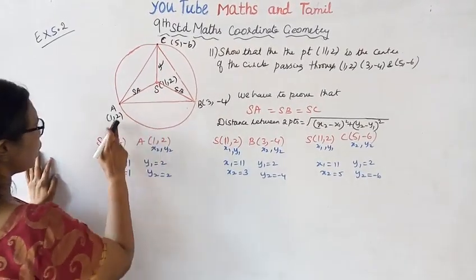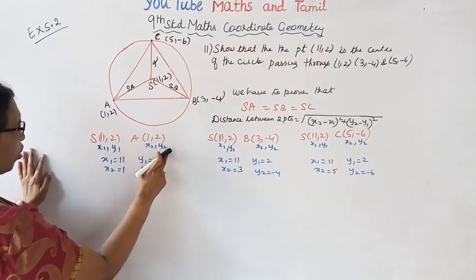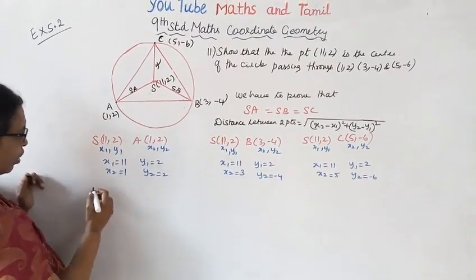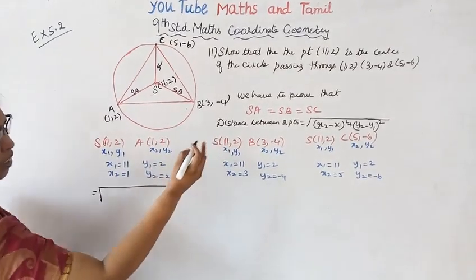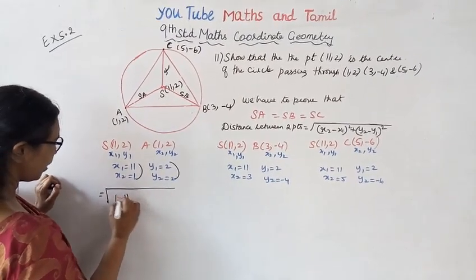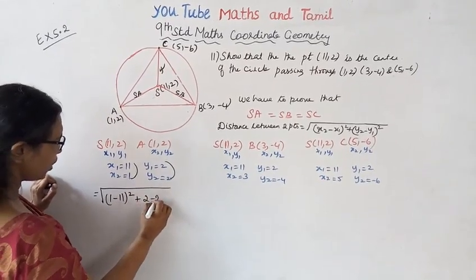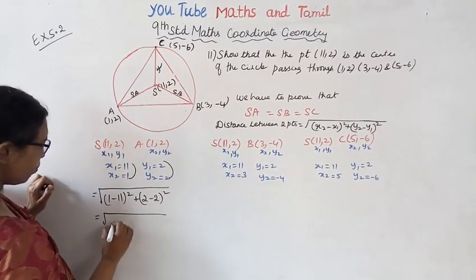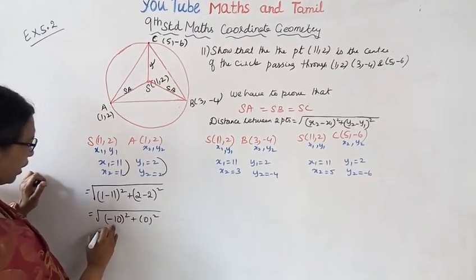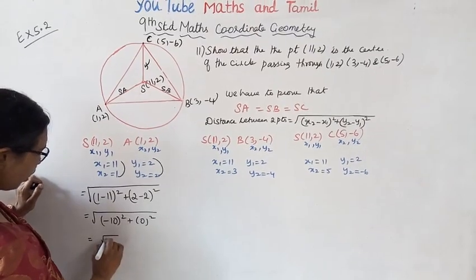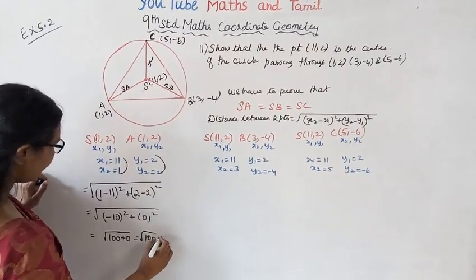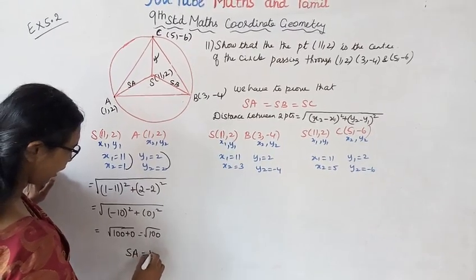SA: S is (11, 2) and A is (1, 2). So x1 = 11, x2 = 1, y1 = 2, y2 = 2. Applying the distance formula: √((1−11)² + (2−2)²) = √((−10)² + 0²) = √(100 + 0) = √100. Therefore SA = 10.